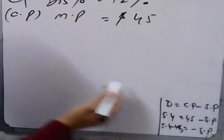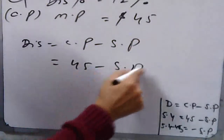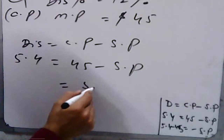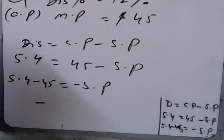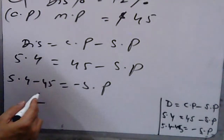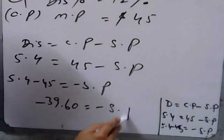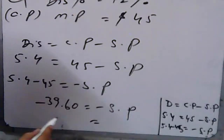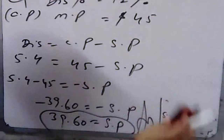Cost price is $45 and discount is $5.40, so Sale Price = 45 − 5.40 = $39.60. That is your required sale price. Coming to question number three.